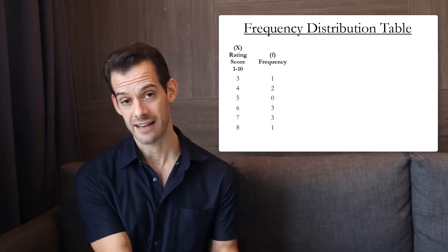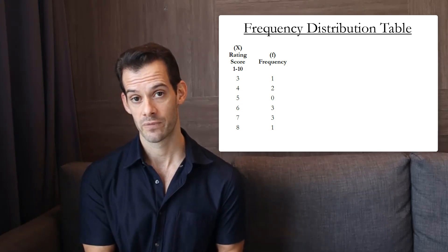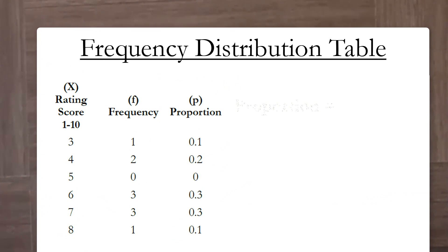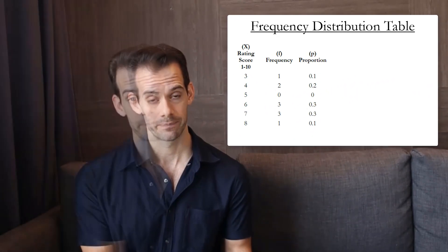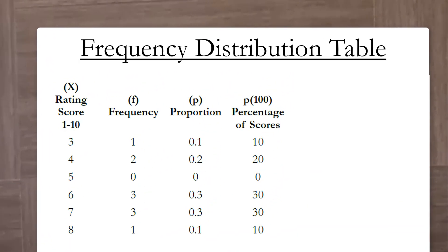In addition to having columns for the possible values of x and the frequency of those values we could include some other information in the table. One thing we might include is the proportion of data found at each value of x. And so we'd find this by taking the frequency at each value of x and dividing it by n. So now we'd have a column telling us the proportion of scores that were found for each value of x. And this column should add up to 1 or very close if we had some rounding. We could also represent the proportion as a percentage and we do this by multiplying this value times 100. So now we'd have the percentage of data from our sample that was found at each value of x. And this column should total to 100%.